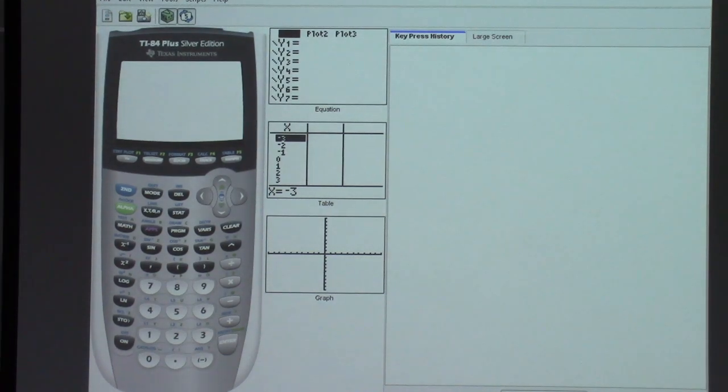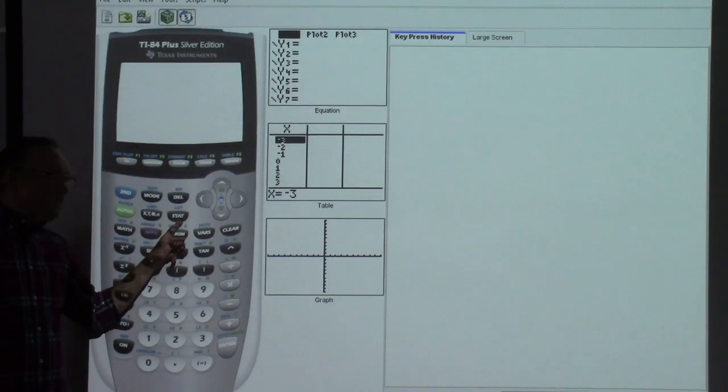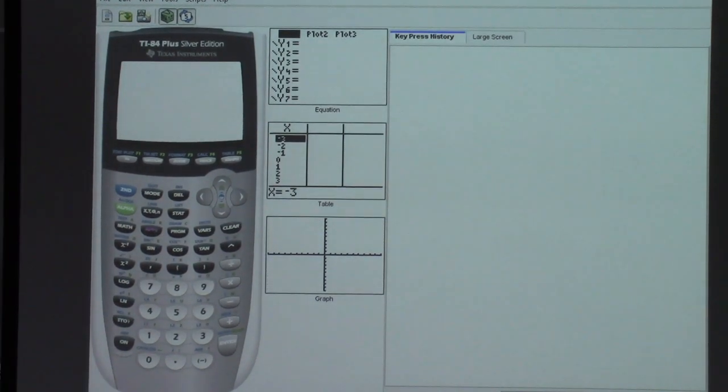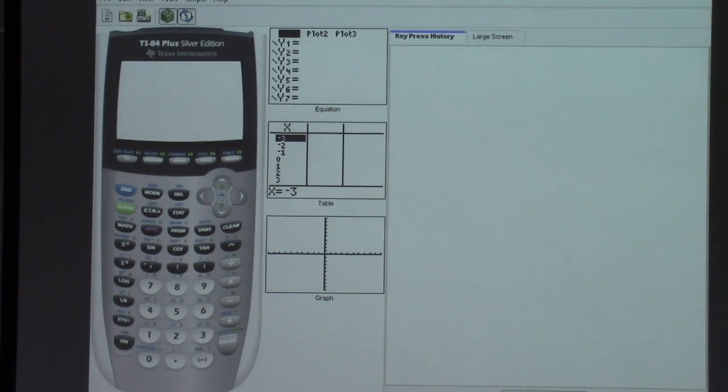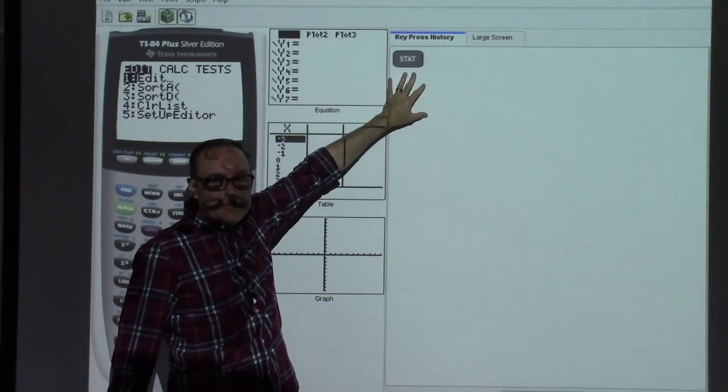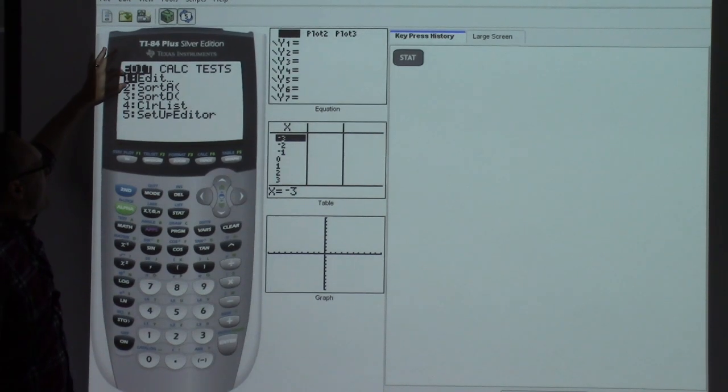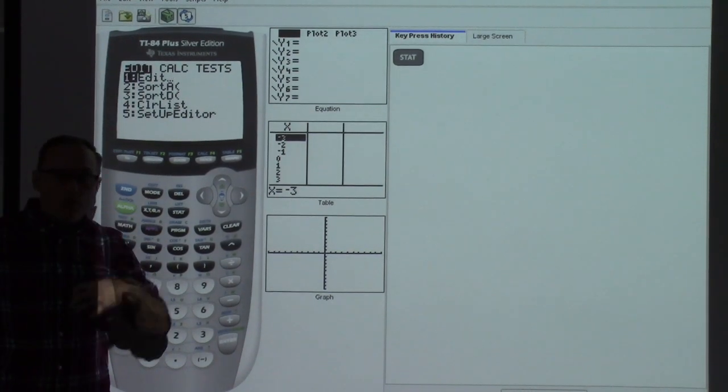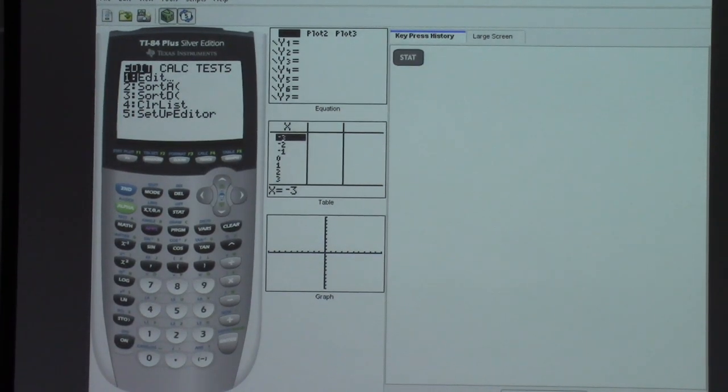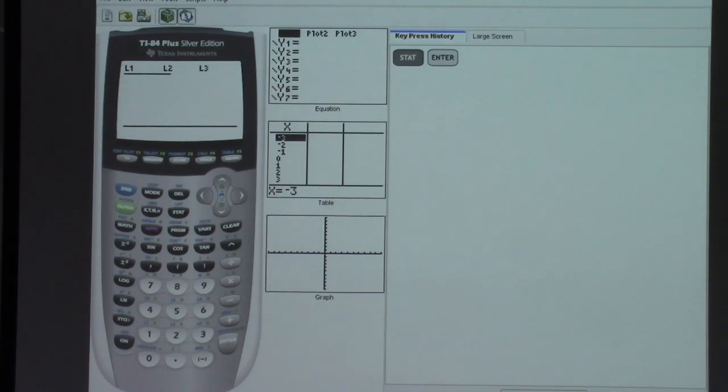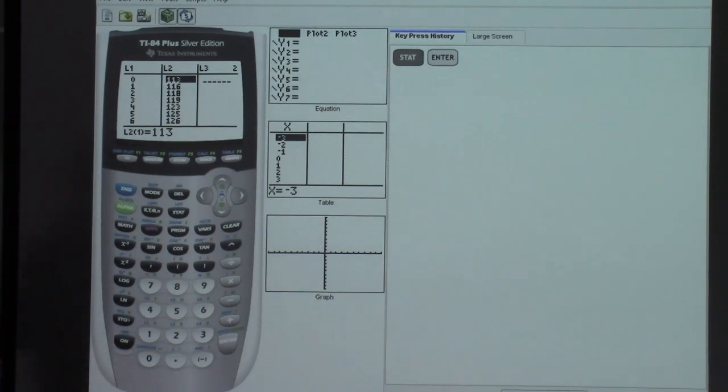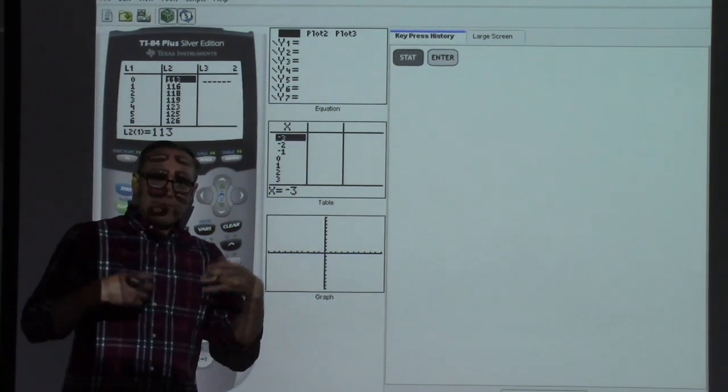We have our STAT button right here. We've got that STAT button, so we're going to hit that. You can follow along with the key press history that we've got showing up here. Notice there's the STAT button that we hit. Here's the menu that we get. It's automatically the edit menu at the top, and the highlighted option is automatically the edit that we would want to select, which means that we can hit our enter button in that lower right-hand corner and get our lists that would show up. Now, for the sake of this particular example, I've already put these lists in.